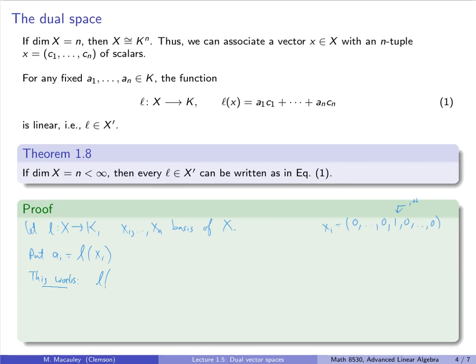So why does it work? Notice that, so let's take an arbitrary element of X, which is a linear combination. So let's say that L of C1x1 plus Cnxn, this is just C1 L of x1 plus Cn L of xn. So this is just C1A1 plus Cn An.